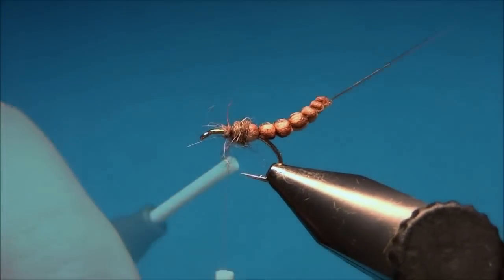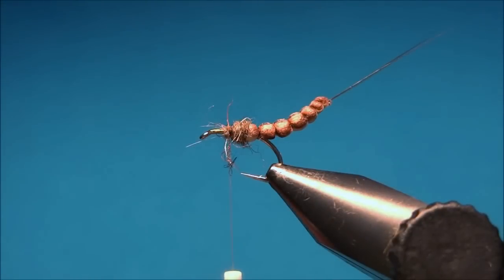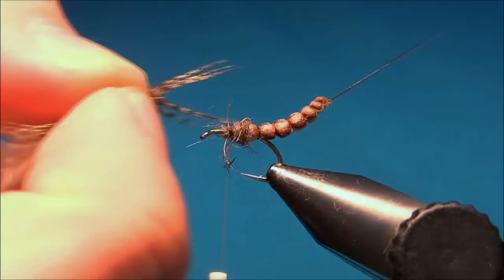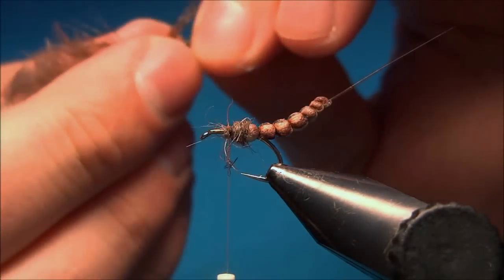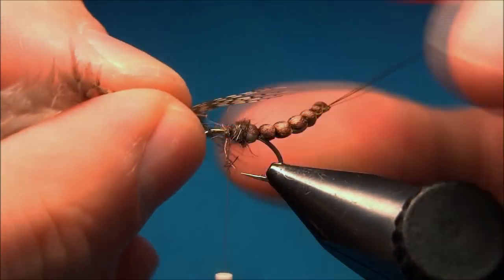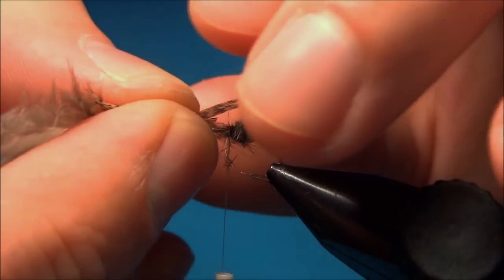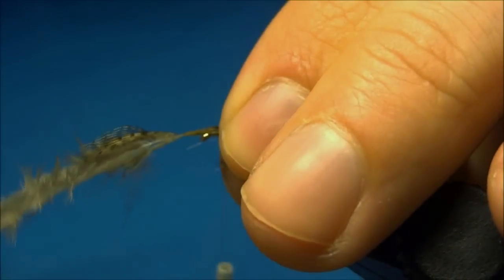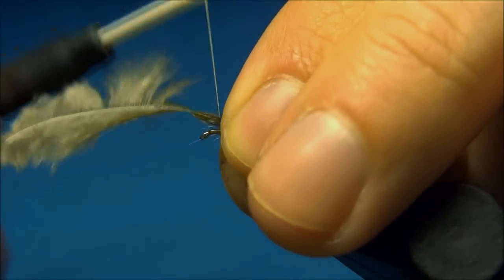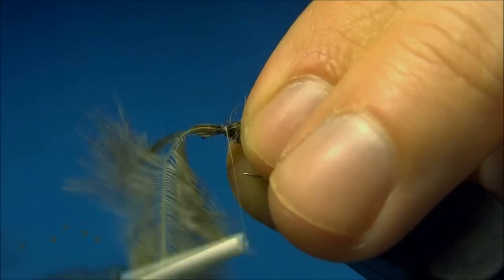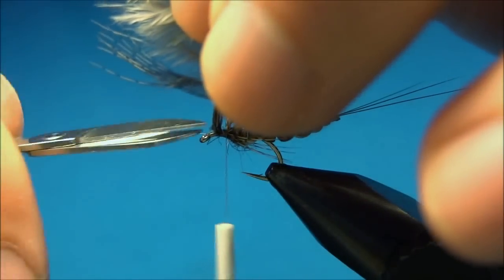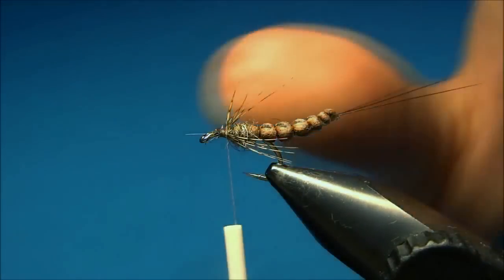Now I'll add some legs and here I have a used partridge feather. And that's ideal it has these fibers on both sides so I just put it at the length that I want and then tie it in. And there are the legs.